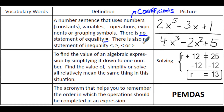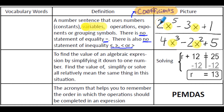So no equal signs and no inequality symbols will be found in these. The numbers that are with our variables are called coefficients. When I look at the variables, the numbers that are with them are the coefficients. Our variables are our letters, our unknowns, or our symbols. And the coefficients are the numbers that are with those variables — so the 2, 3, 4, and 2 are right next to or being multiplied by our variable.